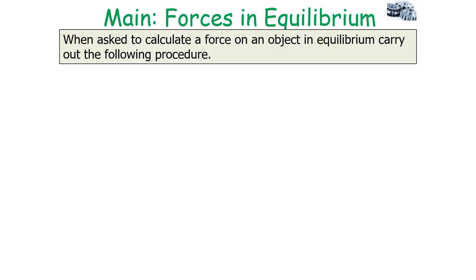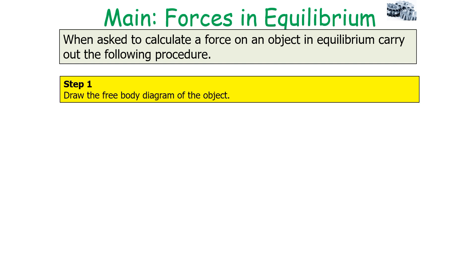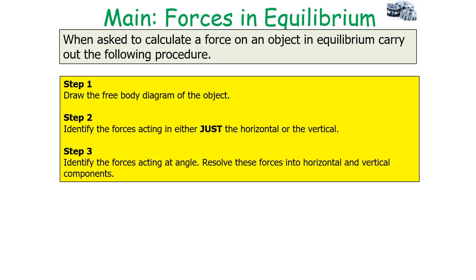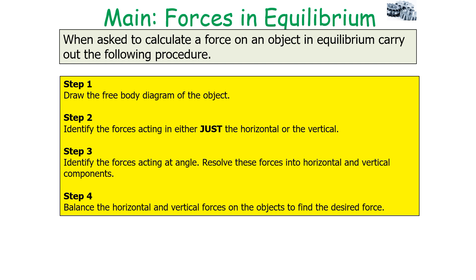When asked to calculate the force on an object in equilibrium, follow these steps: first, draw a free body diagram of the object; second, identify the forces acting purely in the vertical or horizontal directions; third, identify forces acting at an angle and resolve them into horizontal and vertical components using the resolving vectors method; fourth, balance the horizontal and vertical forces to find the desired unknown force.